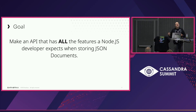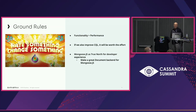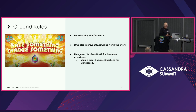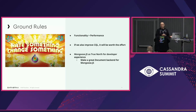Then we'll look at how we can do this now with our data model of storing it and how we have to deal with the updates. Our goal was to make something that a Node.js developer would expect when storing data. Back in 2005, Honda had this advertising campaign called 'Hate Something, Change Something.' In that spirit, we're going to learn about the JSON data model and how we can make Cassandra deal with it.